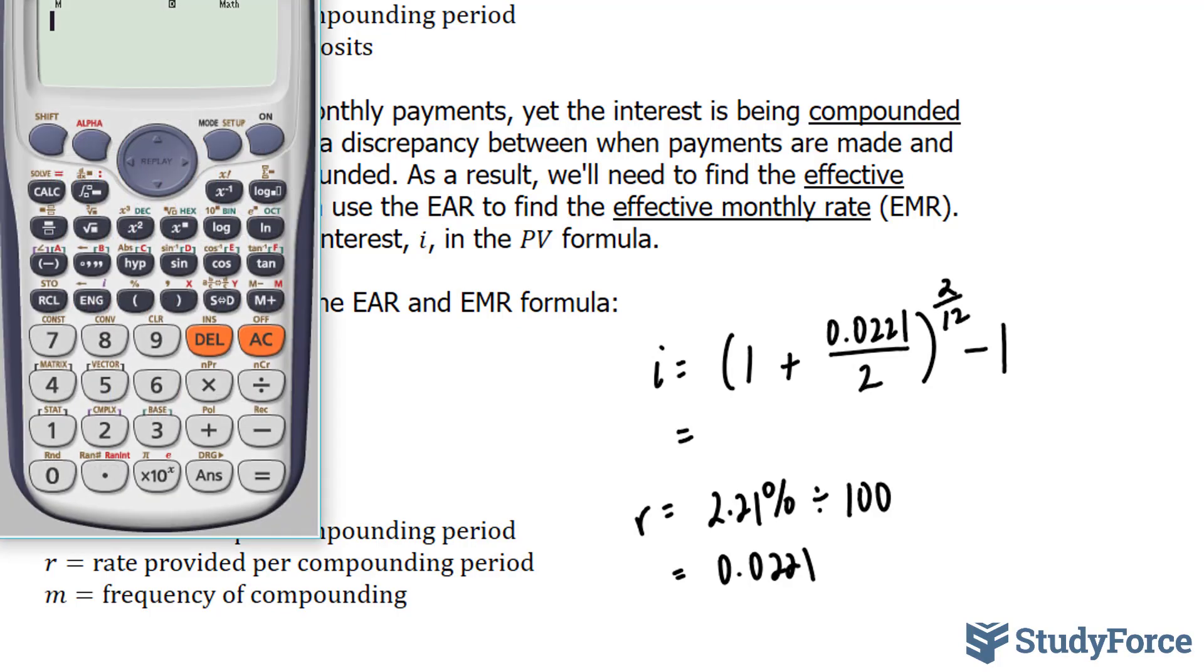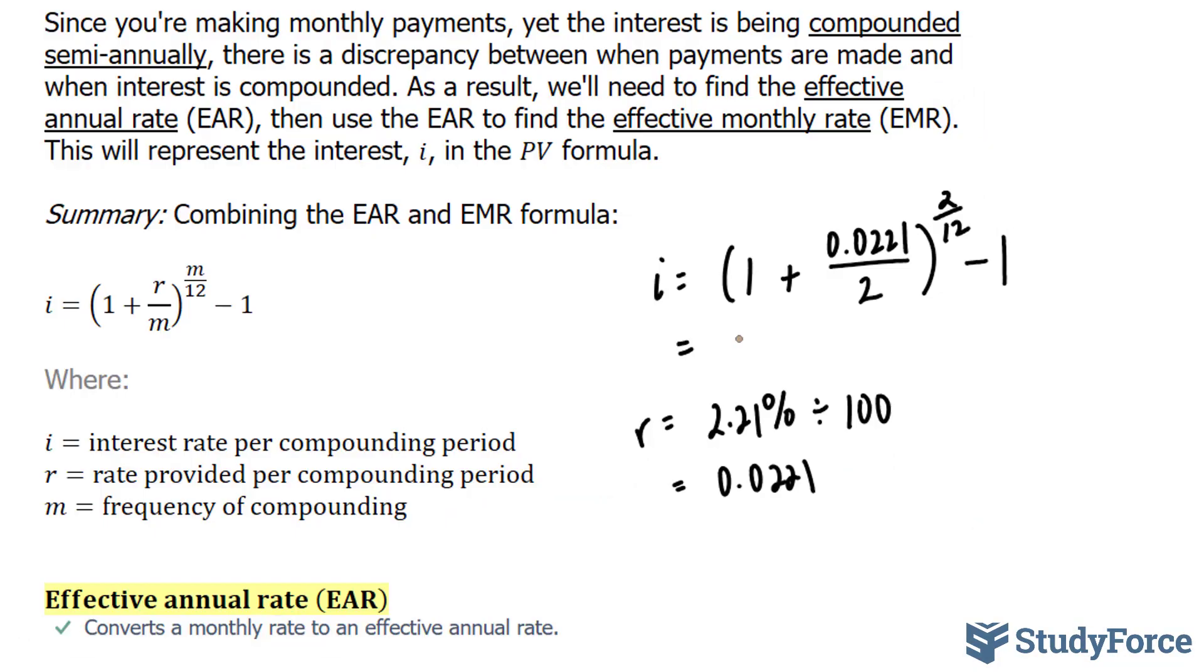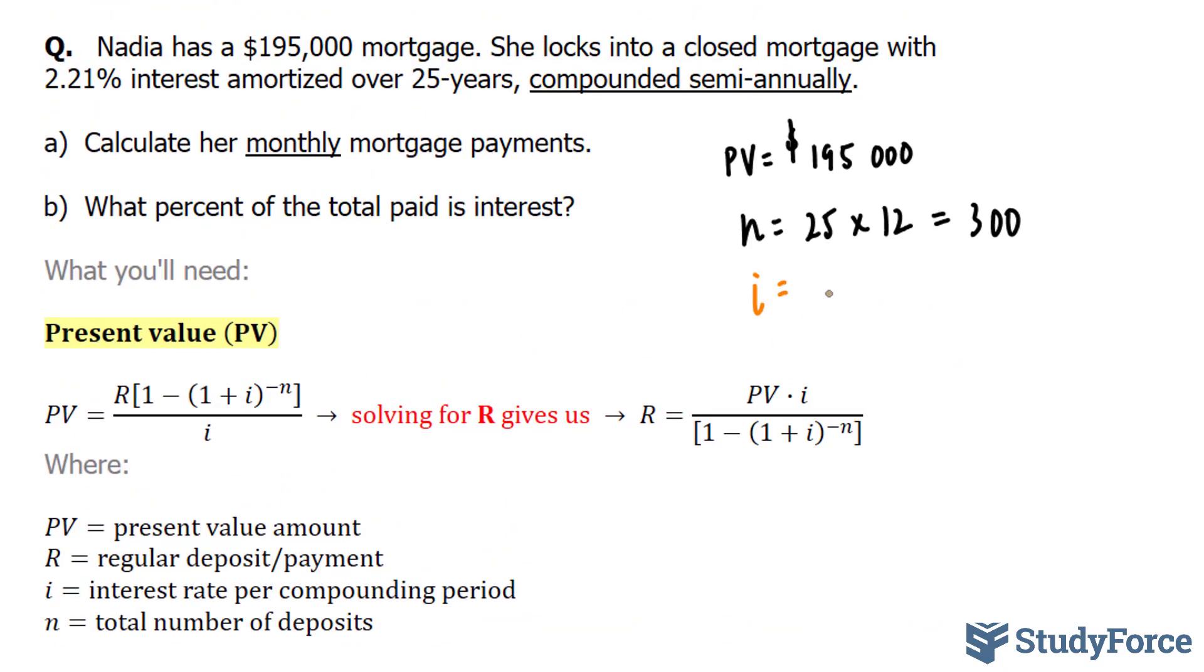Using our calculator, we will end up with bracket 1 plus 0.0221 divided by 2, close bracket, to the power of 2 over 12 minus 1. 0.00183324. So let's write this down above. i is equal to 0.00183324.